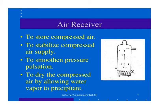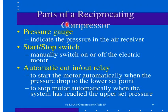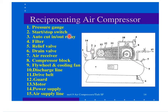The air receiver is used to store compressed air. The parts of the reciprocating compressor include: a pressure gauge, which indicates the pressure in the air receiver; a start/stop switch to manually switch the electric motor on or off; and an automatic cut-in/cut-out relay to start the motor automatically when pressure drops to the lower set point and stop it when the upper set pressure is reached. Other components include an air filter and a relief valve.